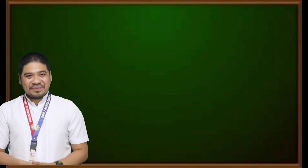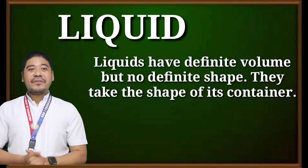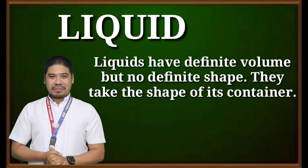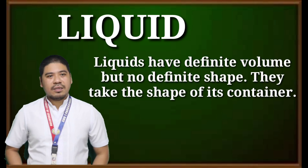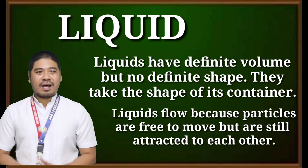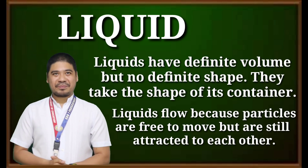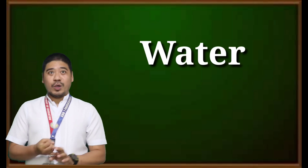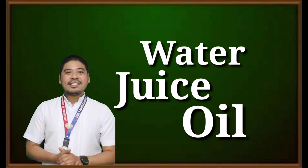Next is the liquid. Liquids have definite volume but no definite shape — they take the shape of their container. Liquids flow because particles are free to move but are still attracted to each other. Examples of liquids are water, juice, and oil.